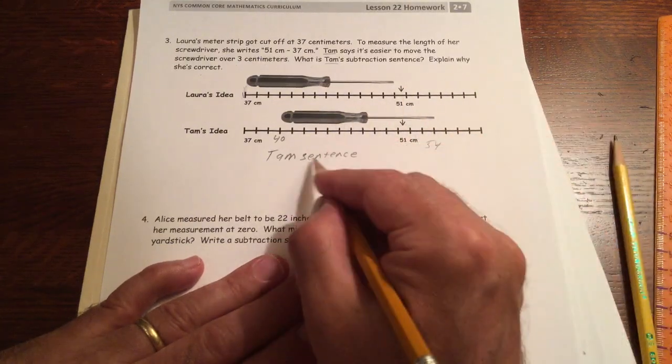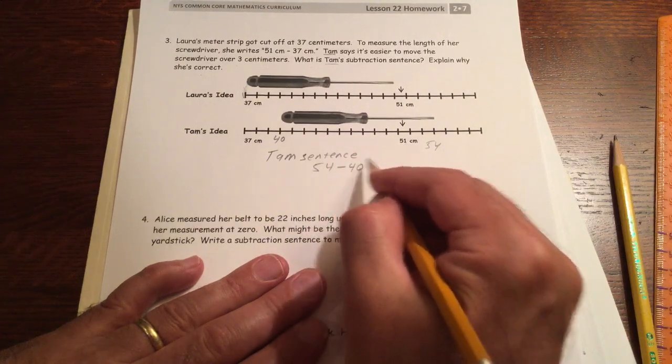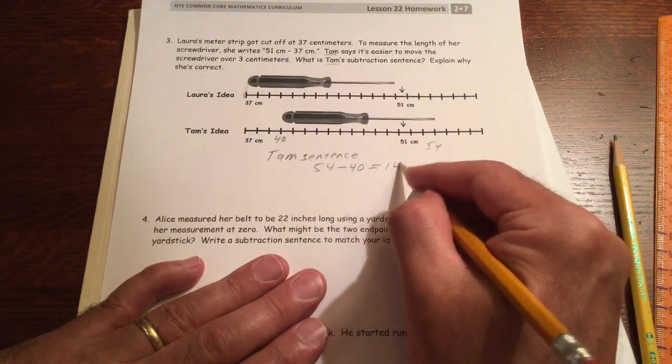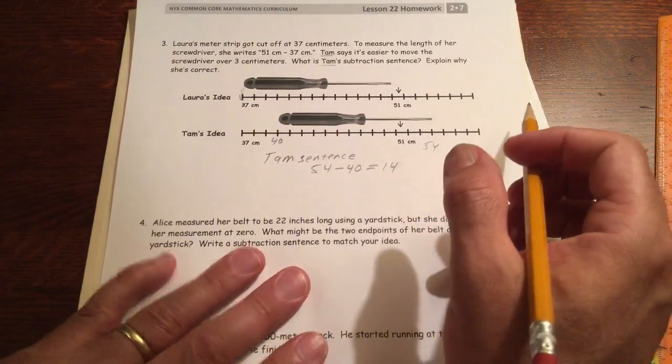So her sentence is going to be 54 minus 40, which is much easier to solve mentally, 14. Now, why is she correct?